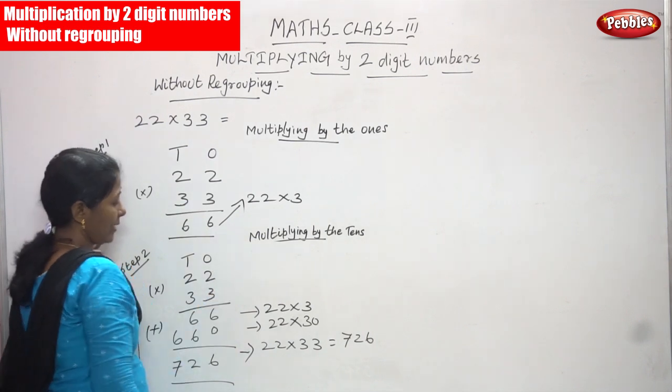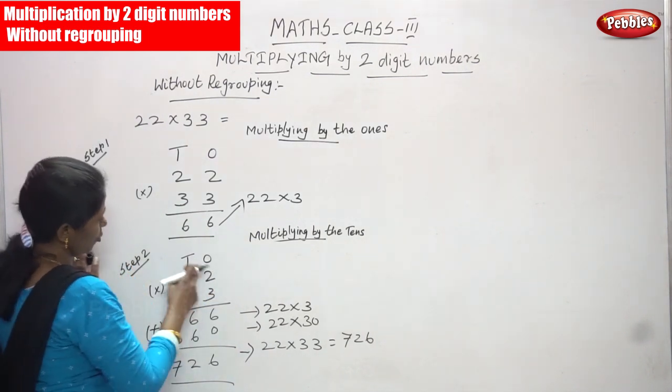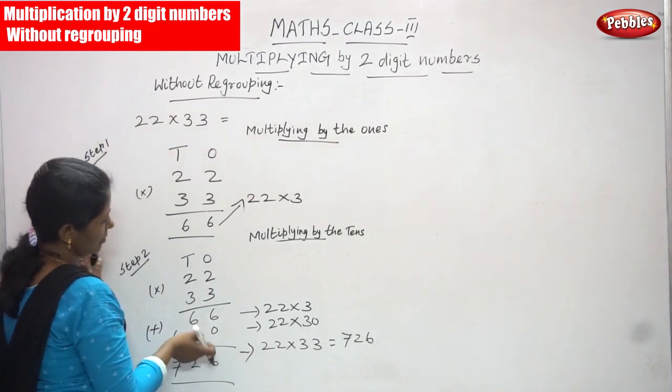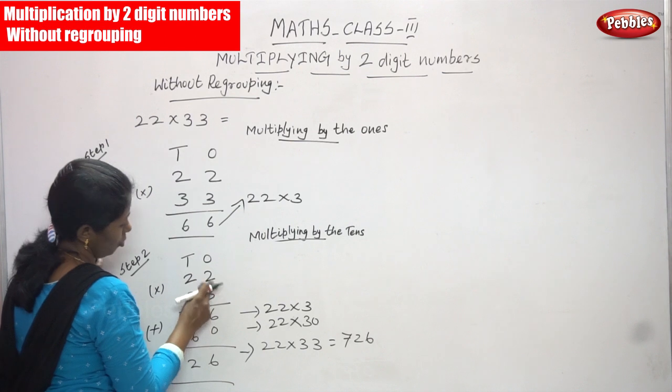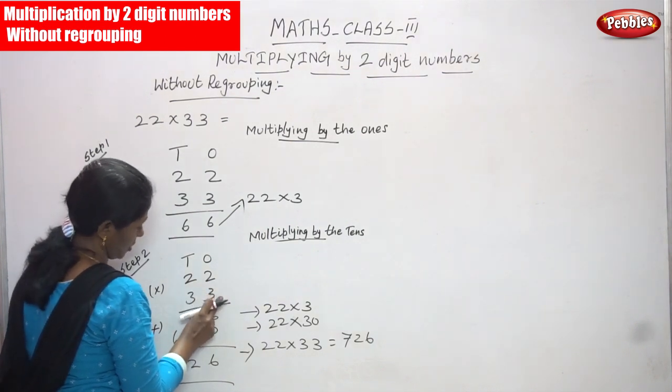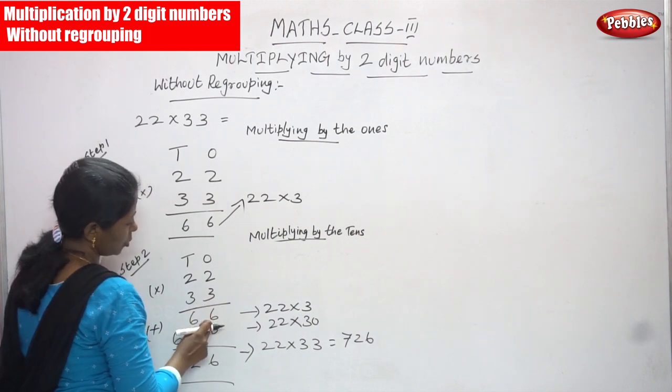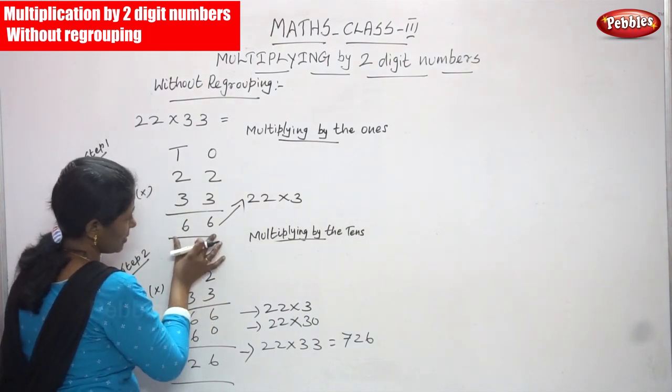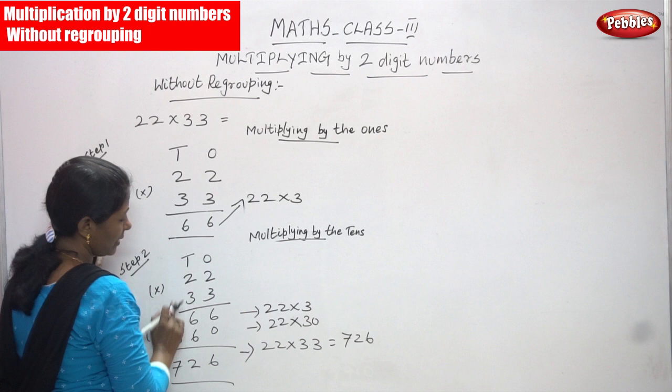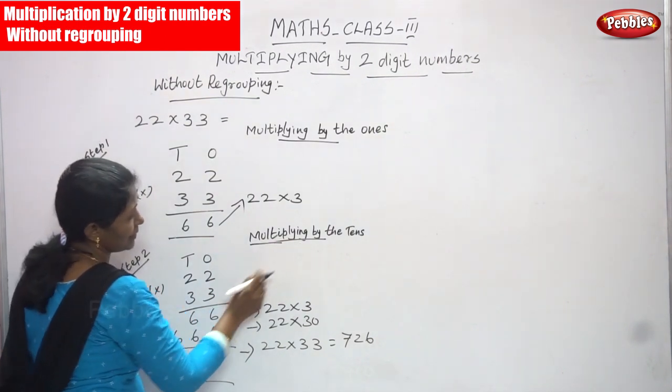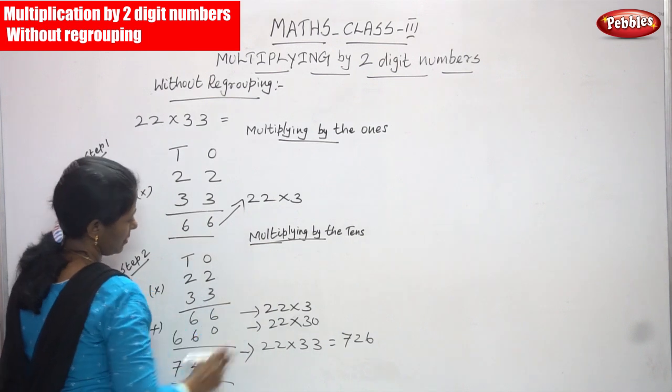Next, multiplying by the 10's. Again you have to write 1's and 10's, 22 and 33. Already you know that first you have to multiply by the 1's. What is the number in the 1's place? That is 3. So 22 is going to multiply by 3. You know that: 2 threes are 6, 2 threes are 6, whatever you have written. You write as it is. Then you are going to multiply by 10's. That is the heading: multiplying by the 10's.